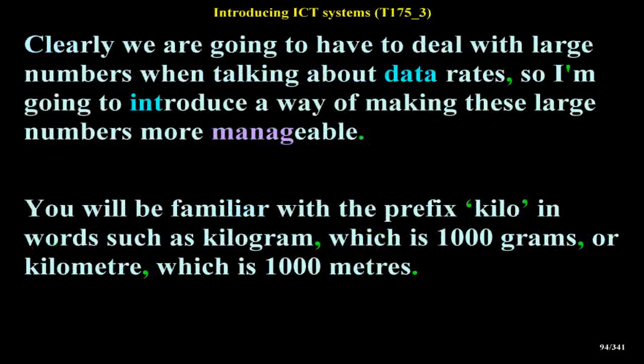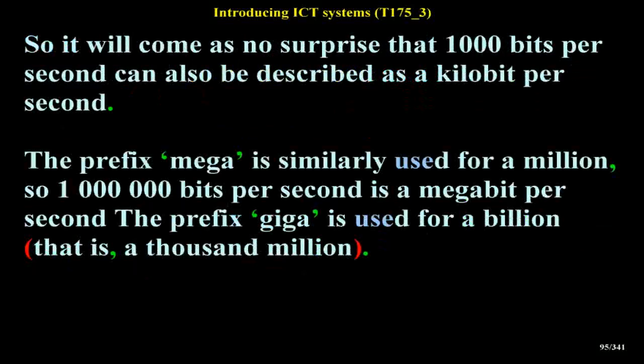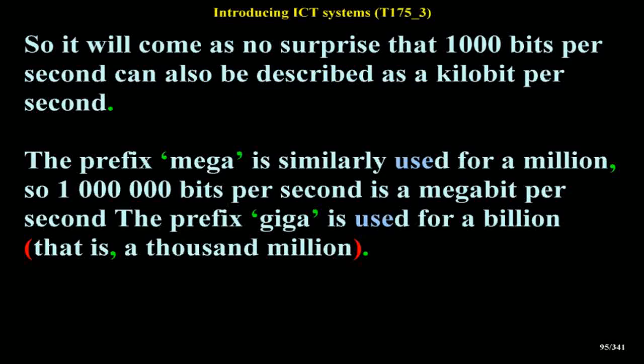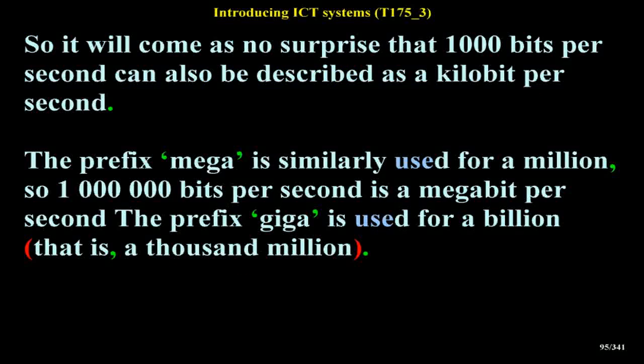Clearly we are going to have to deal with large numbers when talking about data rates. You will be familiar with the prefix kilo in words such as kilogram, which is 1,000 grams. So it will come as no surprise that 1,000 bits per second can also be described as a kilobit per second. The prefix mega is similarly used for million, so 1,000,000 bits per second is a megabit per second. The prefix giga is used for a billion, that is, a thousand million.